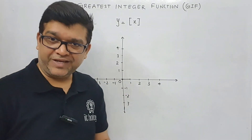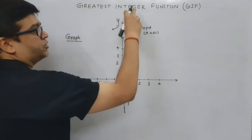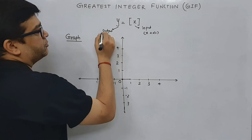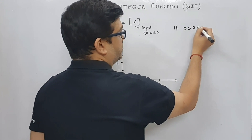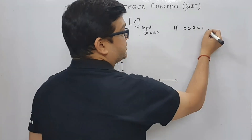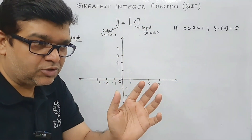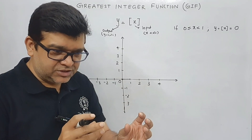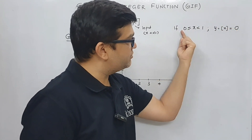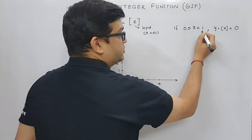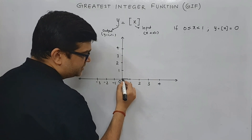Now let's understand the graph of y equal to box of x. Here x is the input plotted on the x-axis, and box of x represented by y is the output on the y-axis. When x lies between zero and one, y which is box of x will be simply zero — because any number between two consecutive integers gives the left hand side integer. So from zero up to just before one, y will always be zero.